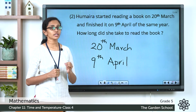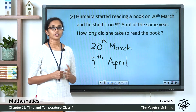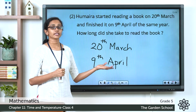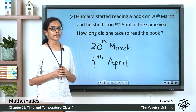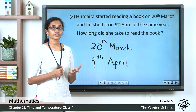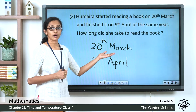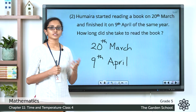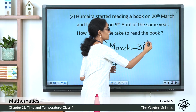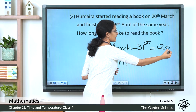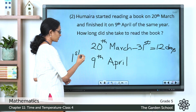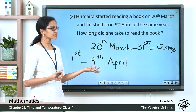For these kinds of questions you need to know how many days are there in each month. You might have heard the rhyme: 30 days have September, April, June and November, and February has 28 days except in a leap year in which February has 29 days. March is a month which has 31 days. So from 20th March to 31st March, how many days are there? There are 12 days. And from 1st April to 9th April, there are a total of 9 days.